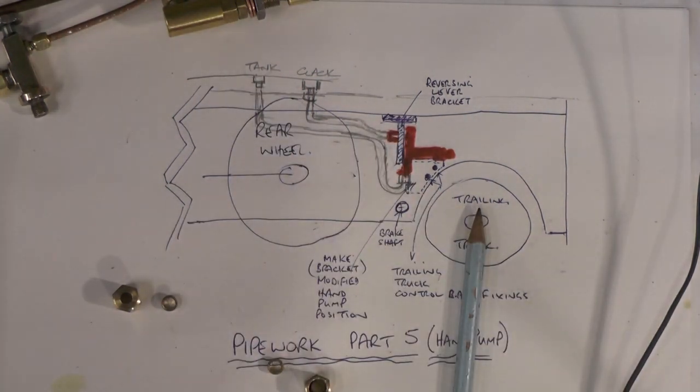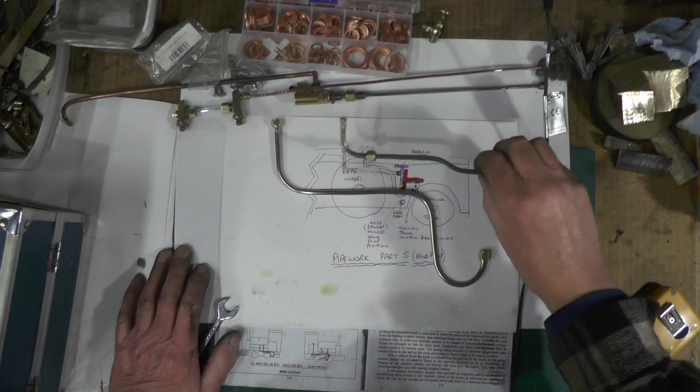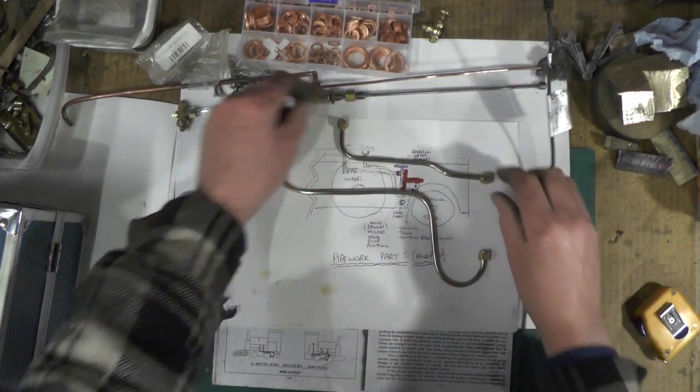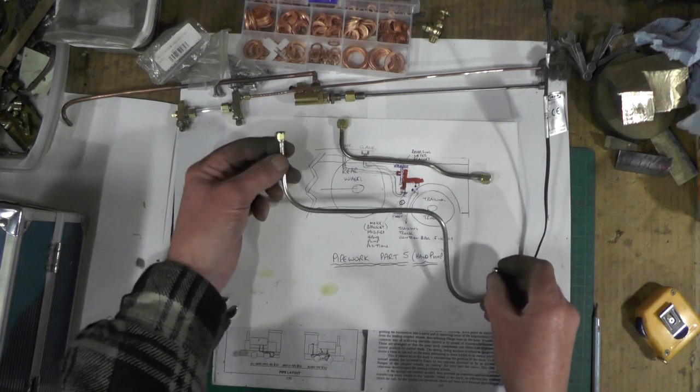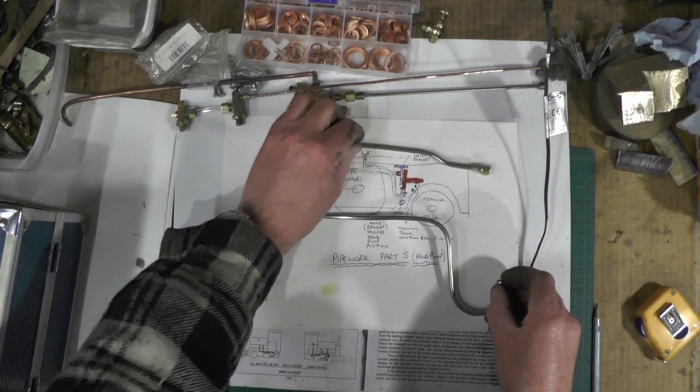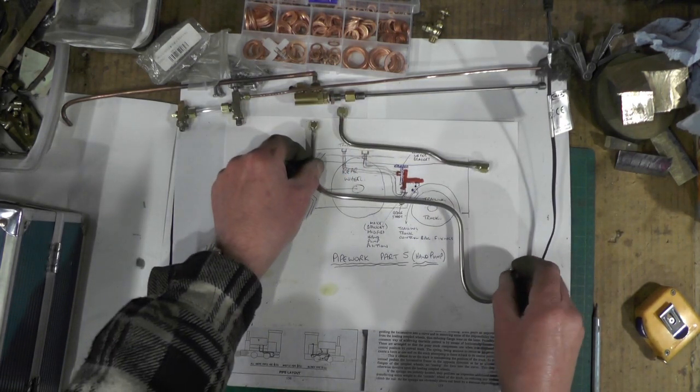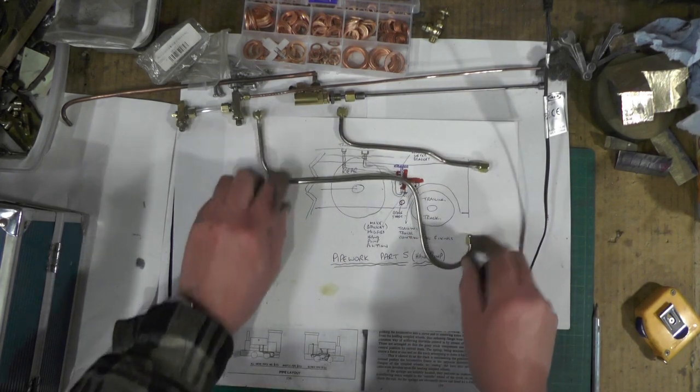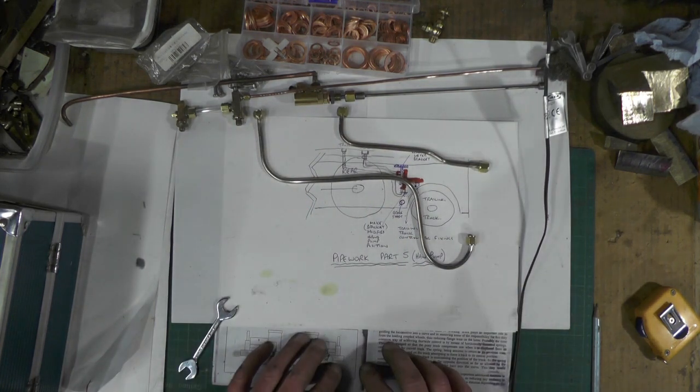So I'll reconvene over at Loco when I've got these two pipes made. So that's the pipe finished for the clack valve to the top of the pump, and then that one's finished now for the tank feed from the tank up to the bottom of the pump. So I'll go over at Loco now and see if they fit.